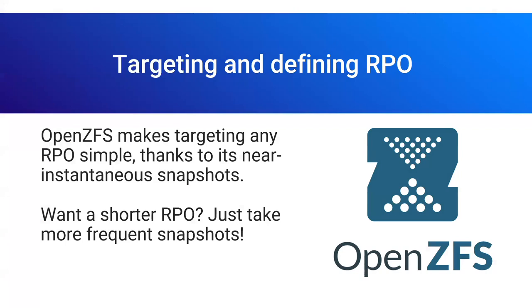Because we're talking about ZFS specifically, our recovery point objective is really easy to figure out — you have a recovery point every time you take a snapshot. For most catastrophes, your RPO is already defined the second you take a snapshot. If you have a malware intrusion, you can just identify the time the malware hit the network, take the affected machine offline, and roll back to the most recent snapshot prior to the intrusion. That's it. Your recovery point is solid.